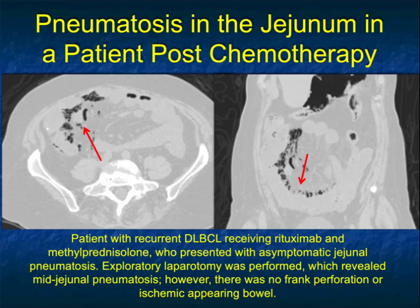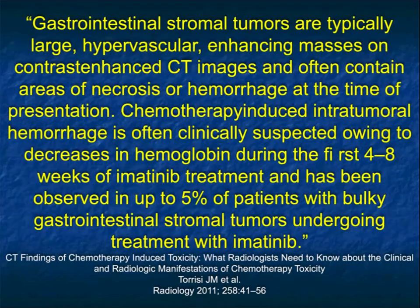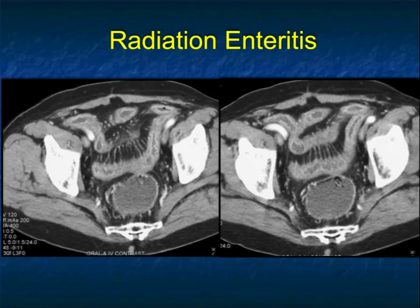Here's a nice example of pneumatosis in the patient's small bowel post-chemotherapy — the patient was essentially asymptomatic and nothing was done. GI perforation can also be related to certain chemotherapy agents. When thinking about whether you're looking at inflammatory, infectious, or chemotherapy-related disease, if you see a perforation it can be due to many things, but chemotherapy is one of them. Certain tumors are more likely to bleed with chemotherapy — particularly when small and in the small bowel — and after chemotherapy they may be even more likely to bleed, ulcerate, or perforate.